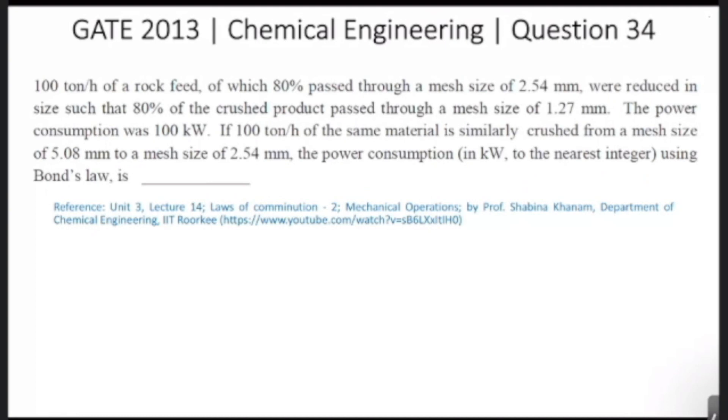This is a question from Chemical Engineering from GATE 2013, question number 34. 100 ton per hour of a rock feed, of which 80% pass through a mesh size of 2.54 millimeter, were reduced in size such that 80% of the crushed product passed through a mesh size of 1.27 millimeter.